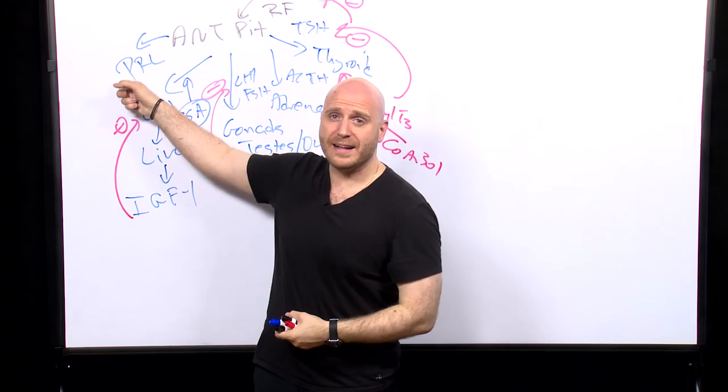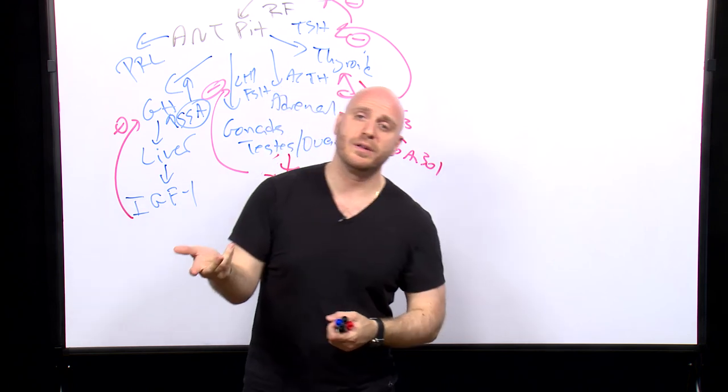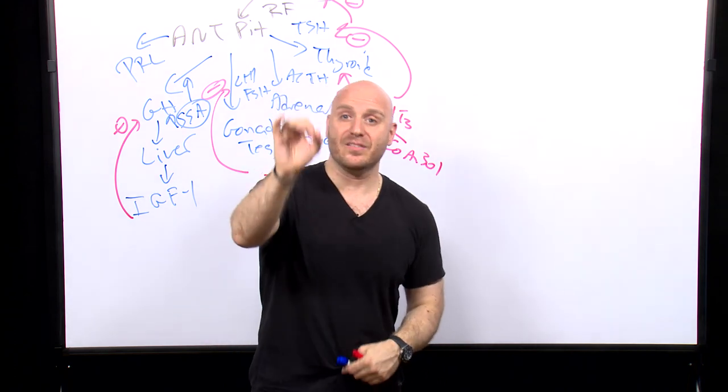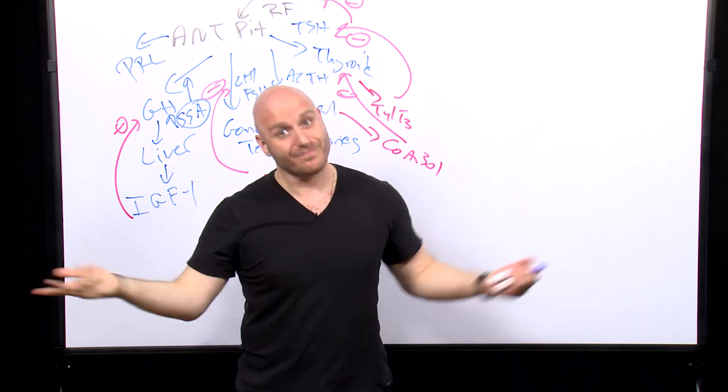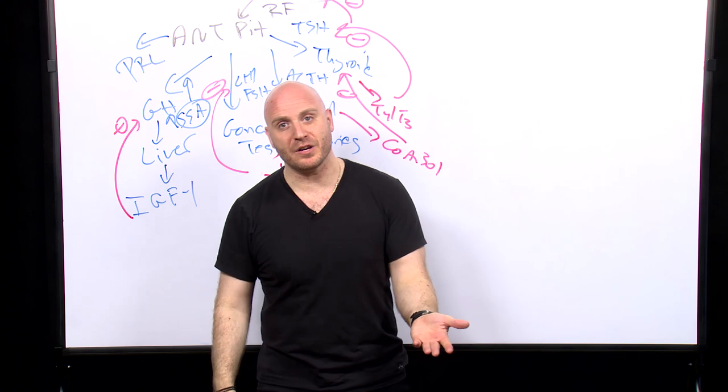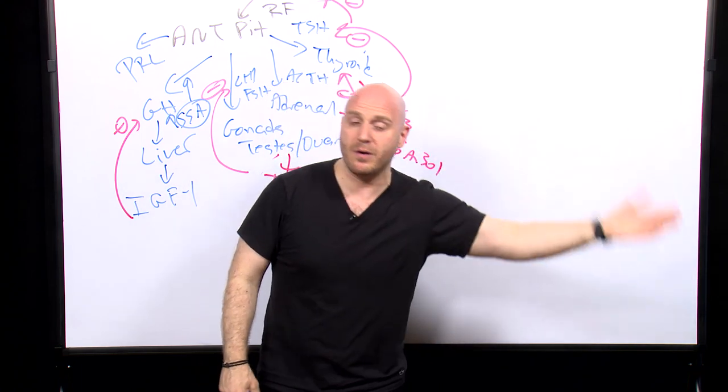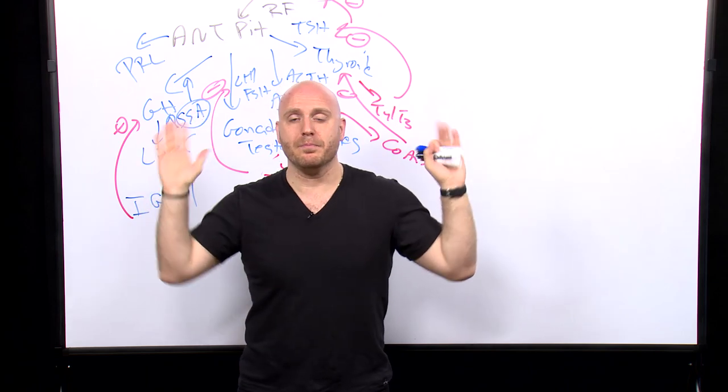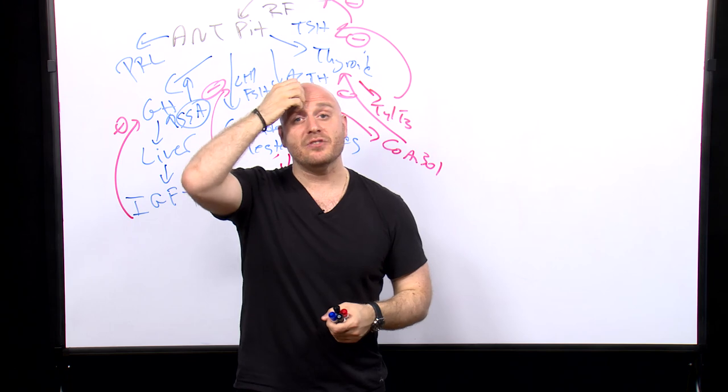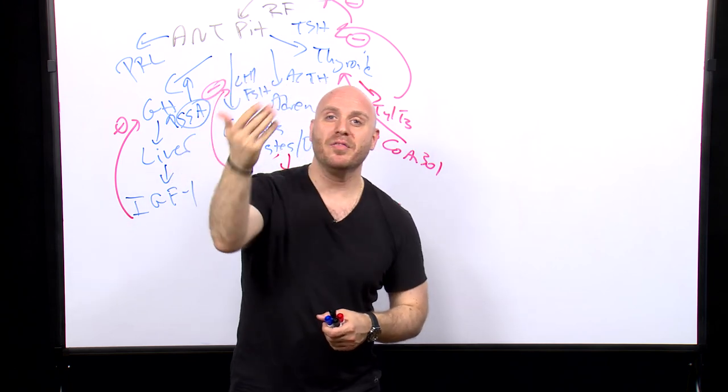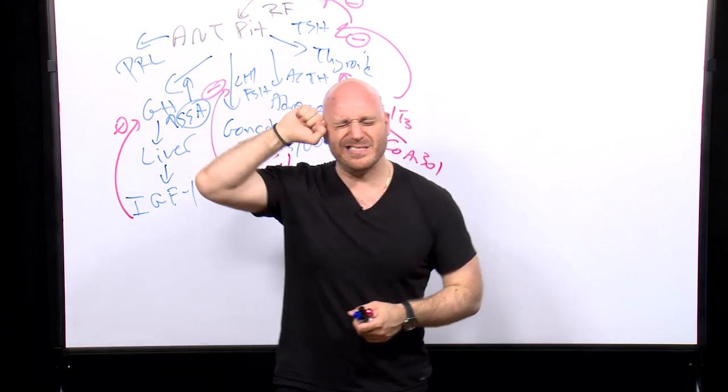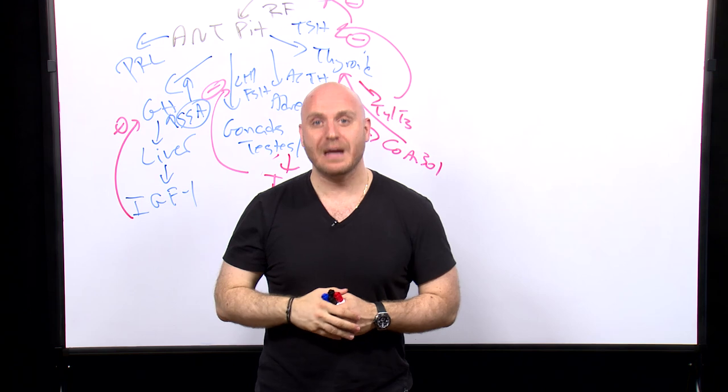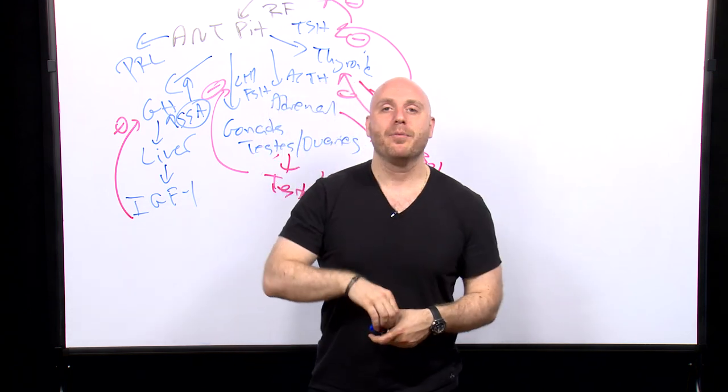The other unique axis is the prolactin axis. Why is prolactin unique? What target gland does prolactin stimulate for target hormone production? None. Prolactin is a stimulatory hormone and a target hormone in itself. Prolactin goes to breast tissue and directly stimulates milk production. There's no prolactin and then a secondary hormone—it's not like TSH and then free T4. Prolactin is on its own, goes to breast tissue, stimulates milk production. But prolactin is unique. What is the hypothalamic releasing factor for prolactin? Think hard.